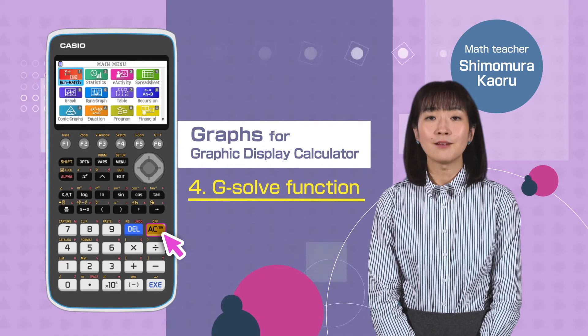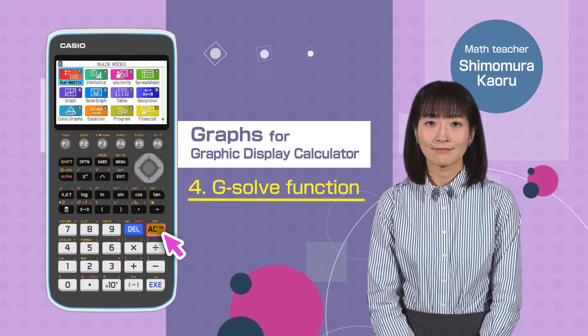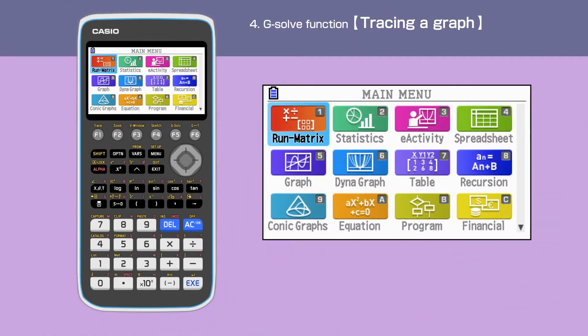Switch on your calculator by pressing the AC button. Press the menu button to open the main menu. Then, move the cursor, or press 5 to select the graph menu.